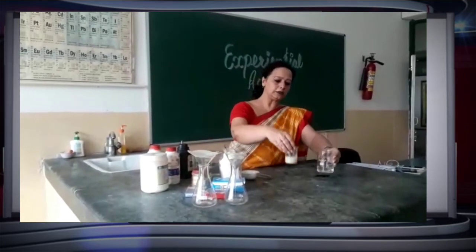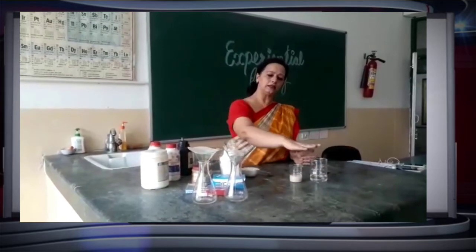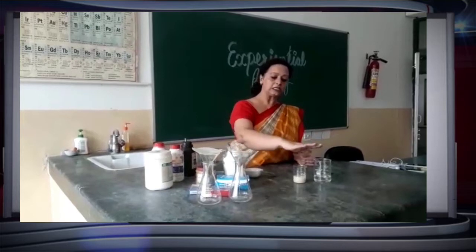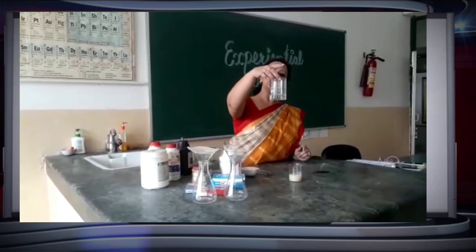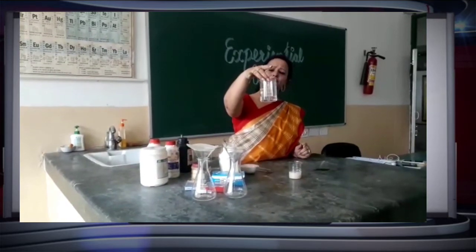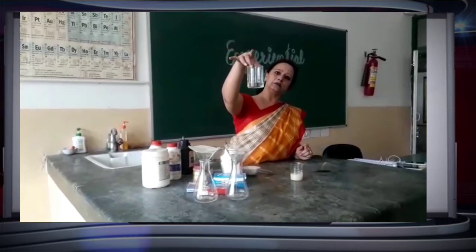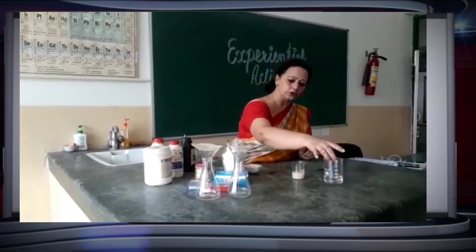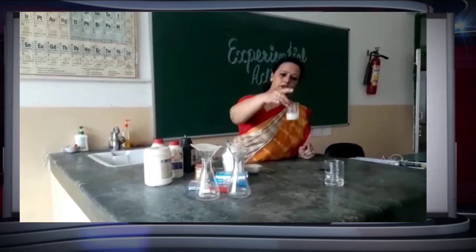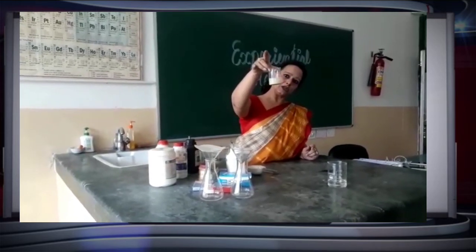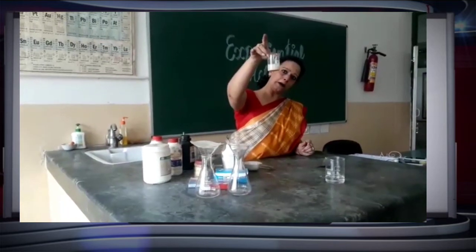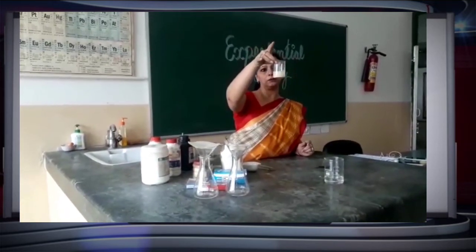Now let us study our third property, that is stability. We have these two solutions: true solution and suspension in two different beakers. I have not touched this true solution for the last 10–15 minutes and we can see it remains in the same condition — so this is a stable solution. Now in the case of suspension, you can see that the chalk powder, that is calcium carbonate, has settled at the bottom. So in chemistry, we call suspension an unstable solution.